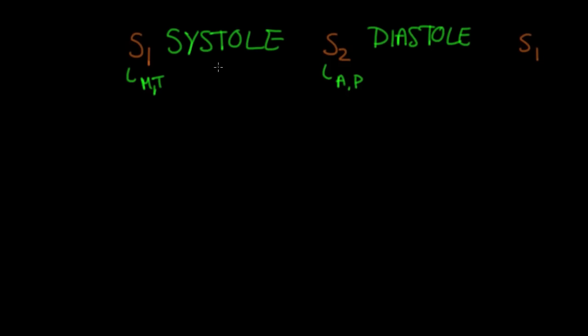Now murmurs can occur between S1 and S2, and these would be systolic murmurs. These would be things like aortic stenosis or pulmonic stenosis, mitral regurgitation, or tricuspid regurgitation. And one other thing that doesn't necessarily cause a murmur, but can be accompanied by mitral regurgitation, would be something like mitral valve prolapse.